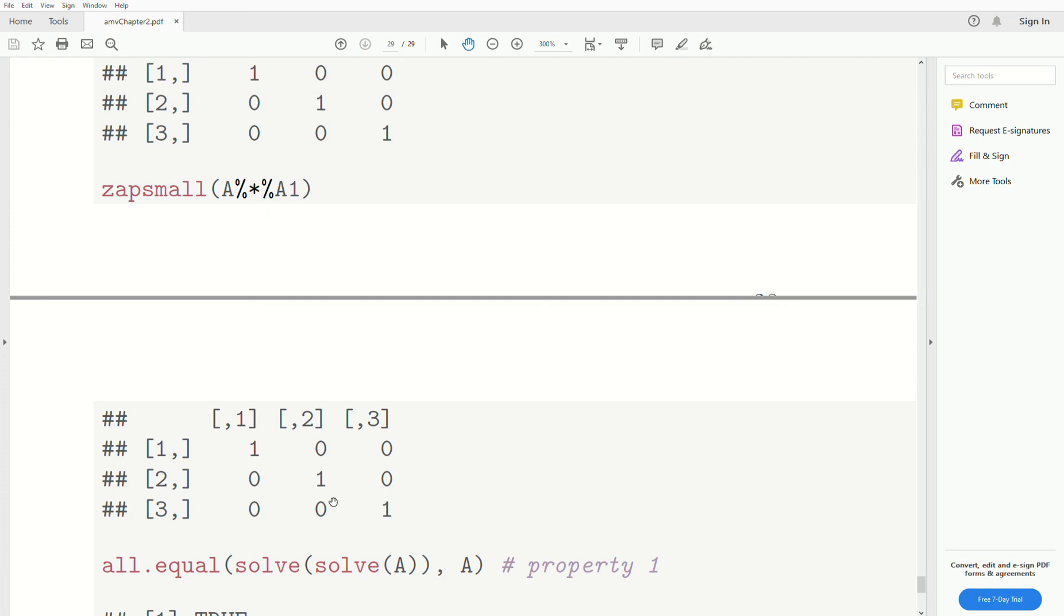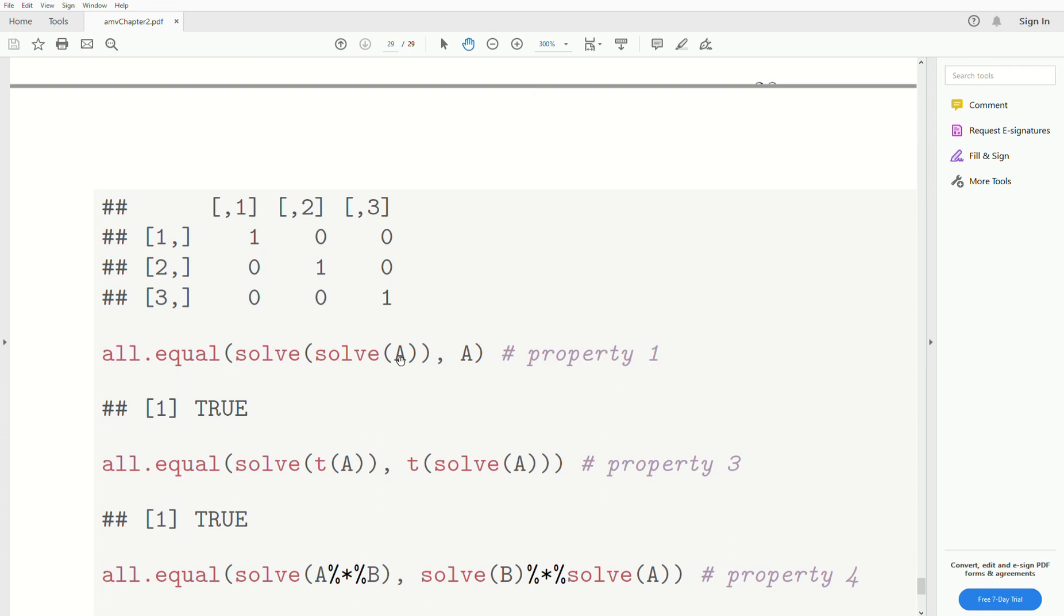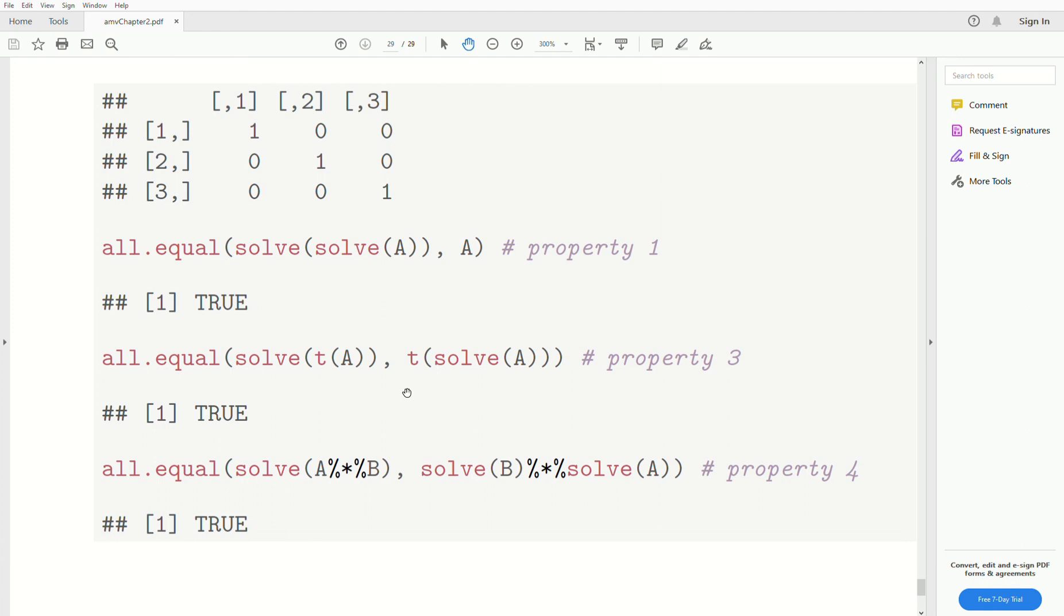Now if we look at property 1, the inverse of the inverse of A is equal to A. And that's true. Remember, the all equal function evaluates every component. And if they're all true, it comes back true.